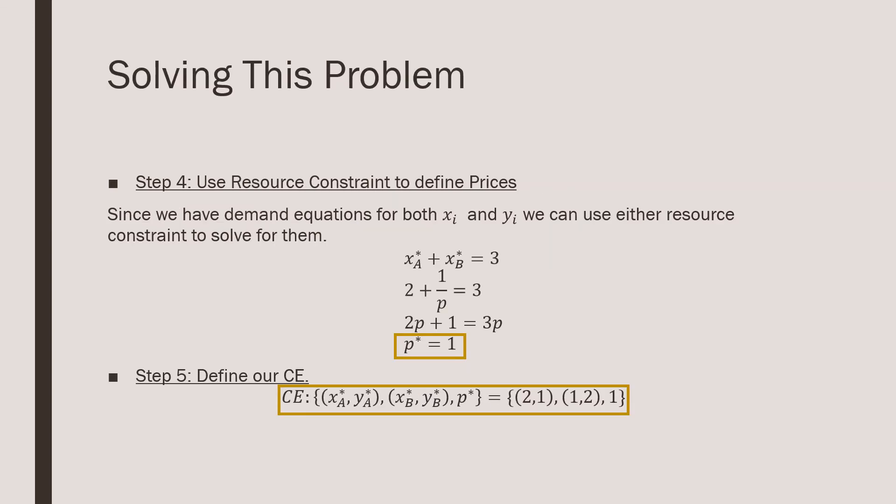From there, we're going to use our resource constraint to define prices. Since we have demand equations for both X and Y, we can use either resource constraint. I'm just going to use X. You can verify that you'll get the same prices from Y based on our answers. We sub in XA and XB, their demands. We do a little manipulation and find that our prices, which is the main focal point of what supports our allocation, equals one.